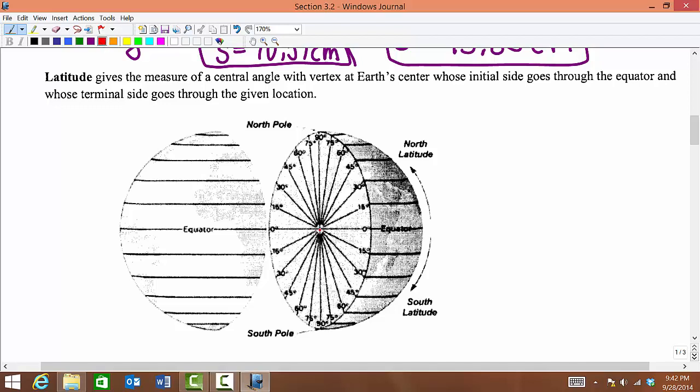If we put the vertex at the center of the Earth and the equator represents our initial side, then that central angle is formed by going up from that. So this would be like 15 degrees on the Earth.